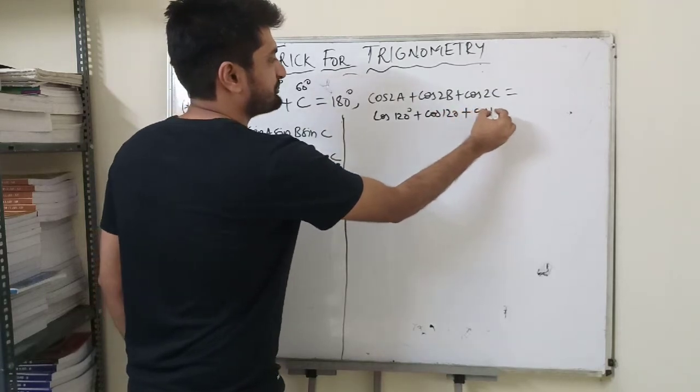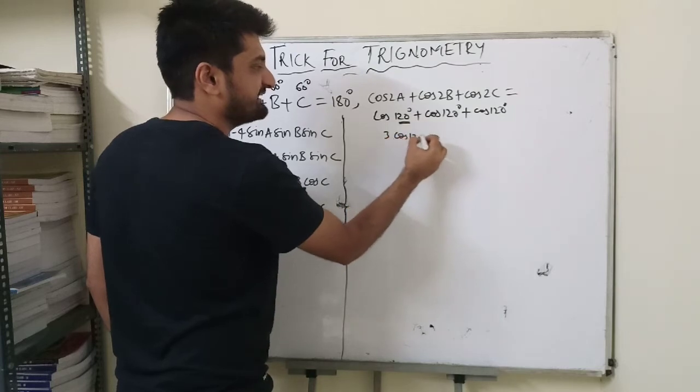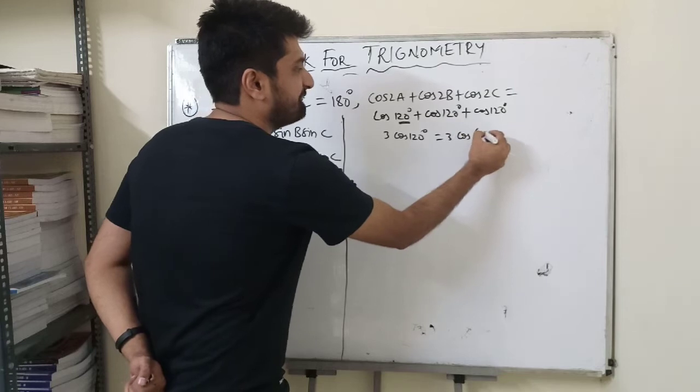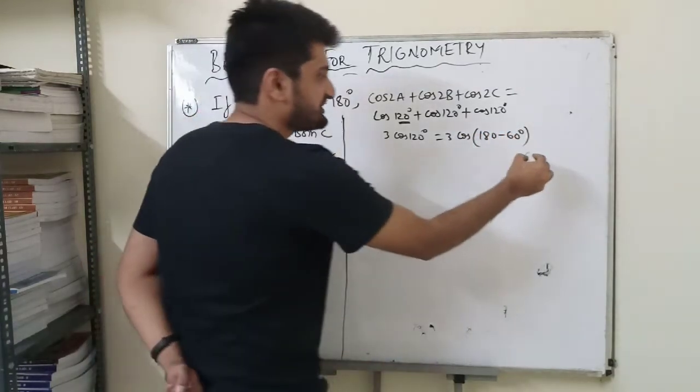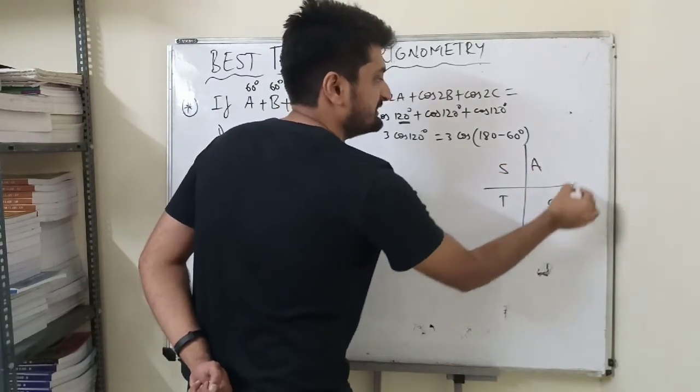This will be three times cos120 degrees. And we know that cos120 will be 180 minus 60 degrees. We can check from our quadrant table whether it will lie or not.